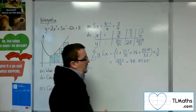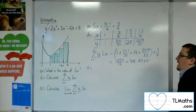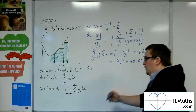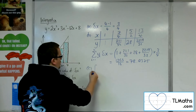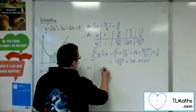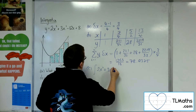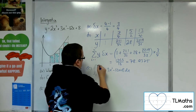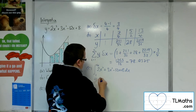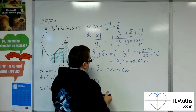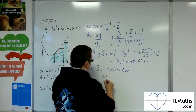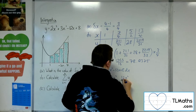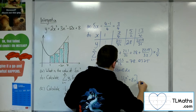Part c asks for the limit. If I make the strips infinitesimally thin, then this will be equal to the integral. So I'm actually being asked to integrate 2x cubed plus 3x squared minus 12x plus 8 between 1 and 4 to work out the exact value. Adding 1 to the power: 2x to the 4 over 4, plus 3x cubed over 3, minus 12x squared over 2, plus 8x, evaluated between 1 and 4.